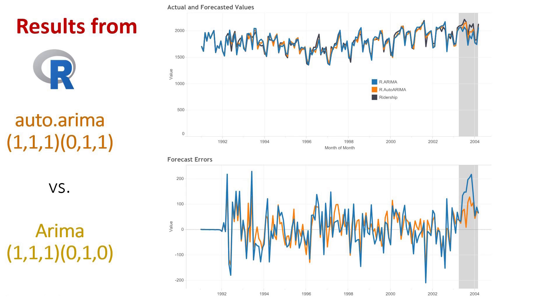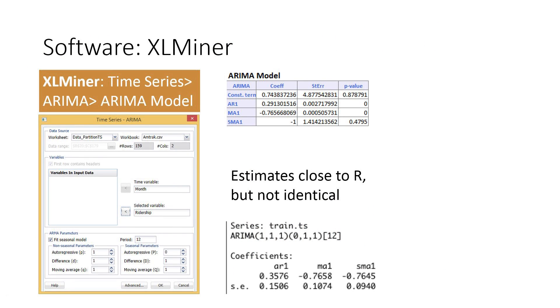In XLMiner, there is no automated ARIMA model selection procedure, but let's manually choose the best model that R gave us. We do this by setting the ARIMA parameters in the dialog box. We must also specify the seasonality type. The result looks similar but not identical to R's coefficients.